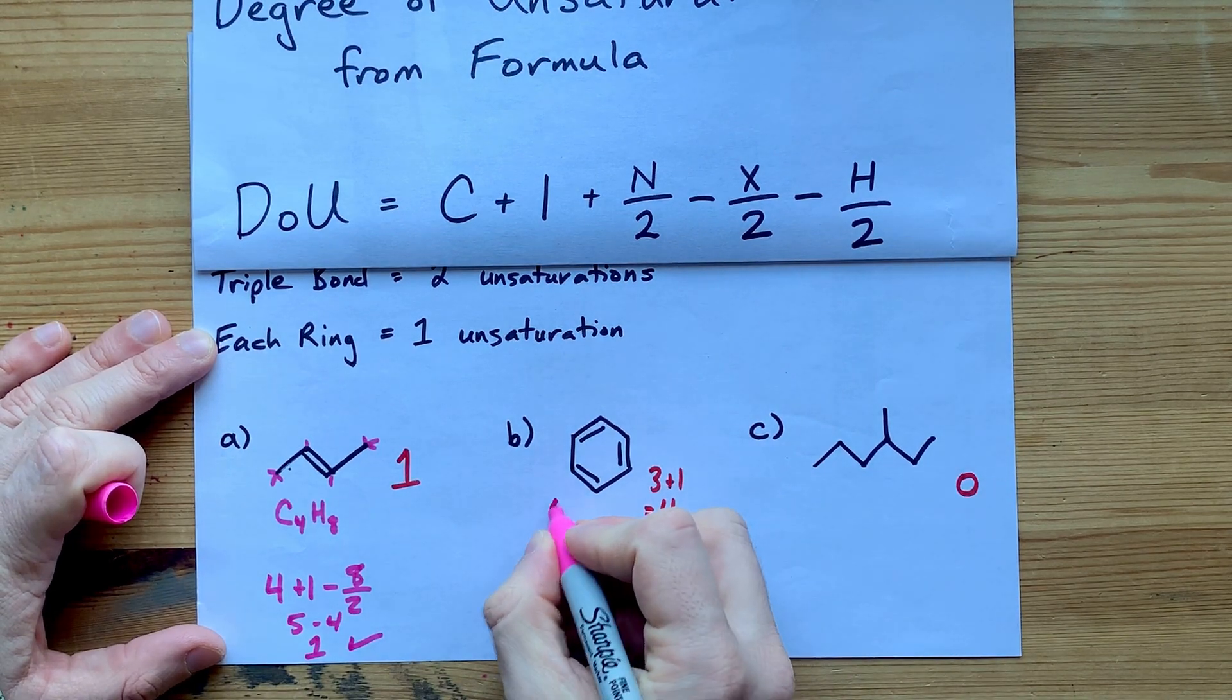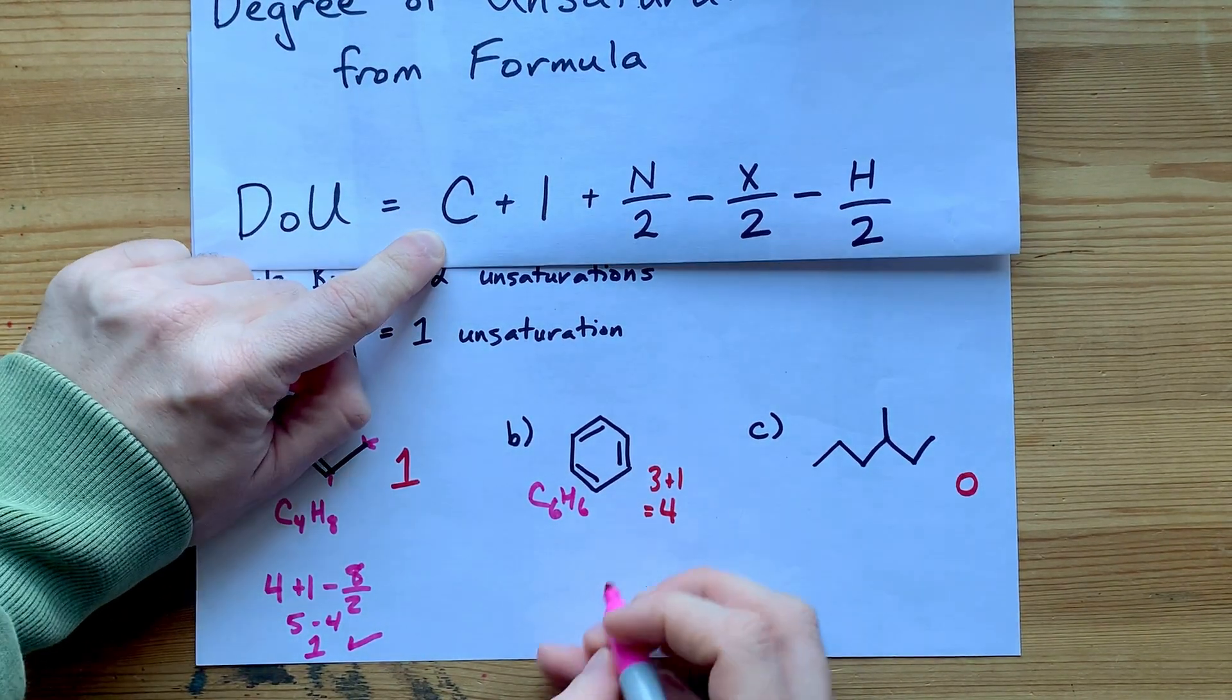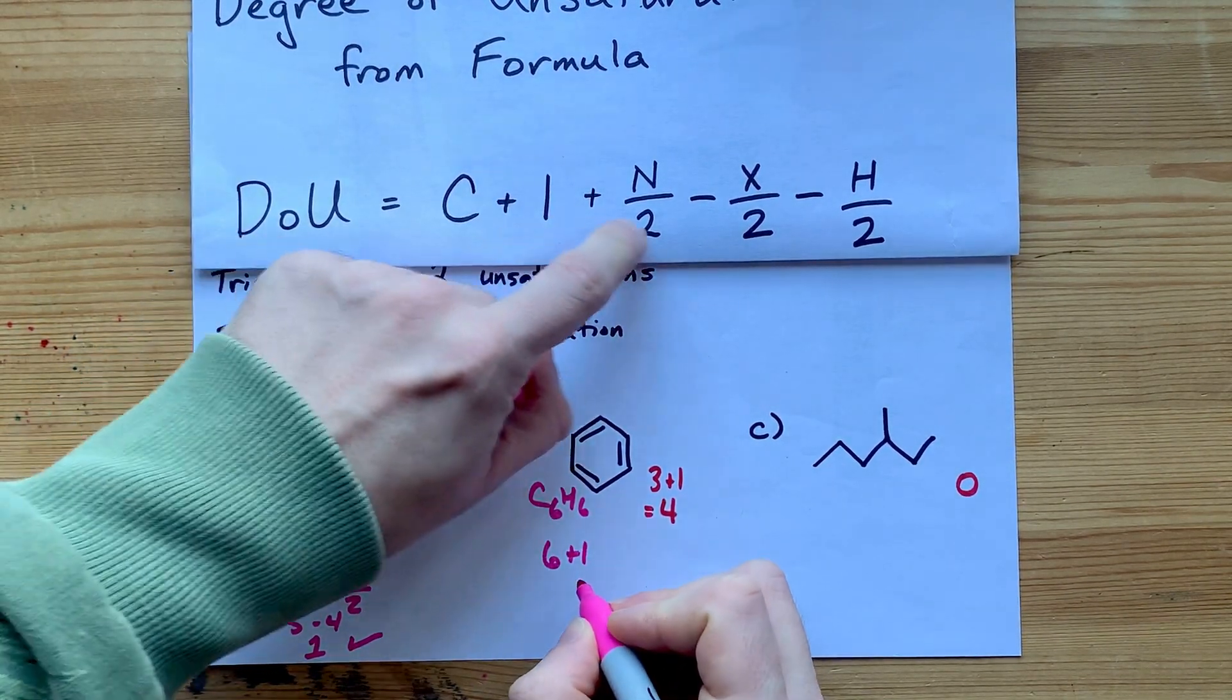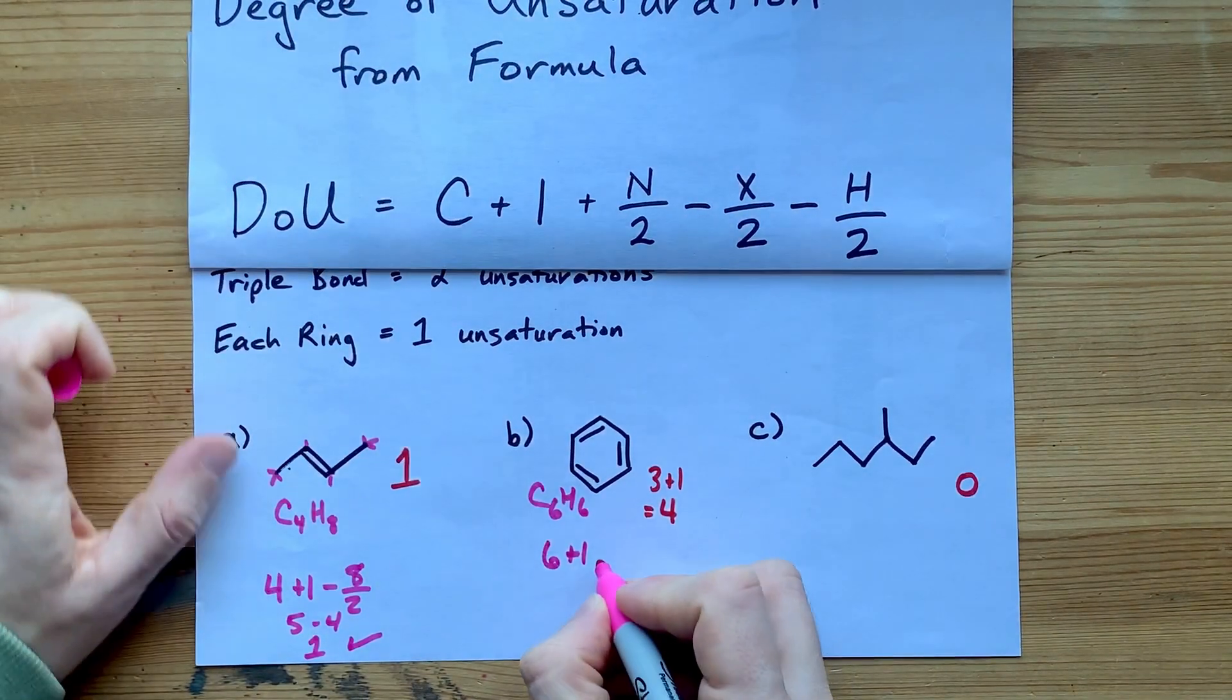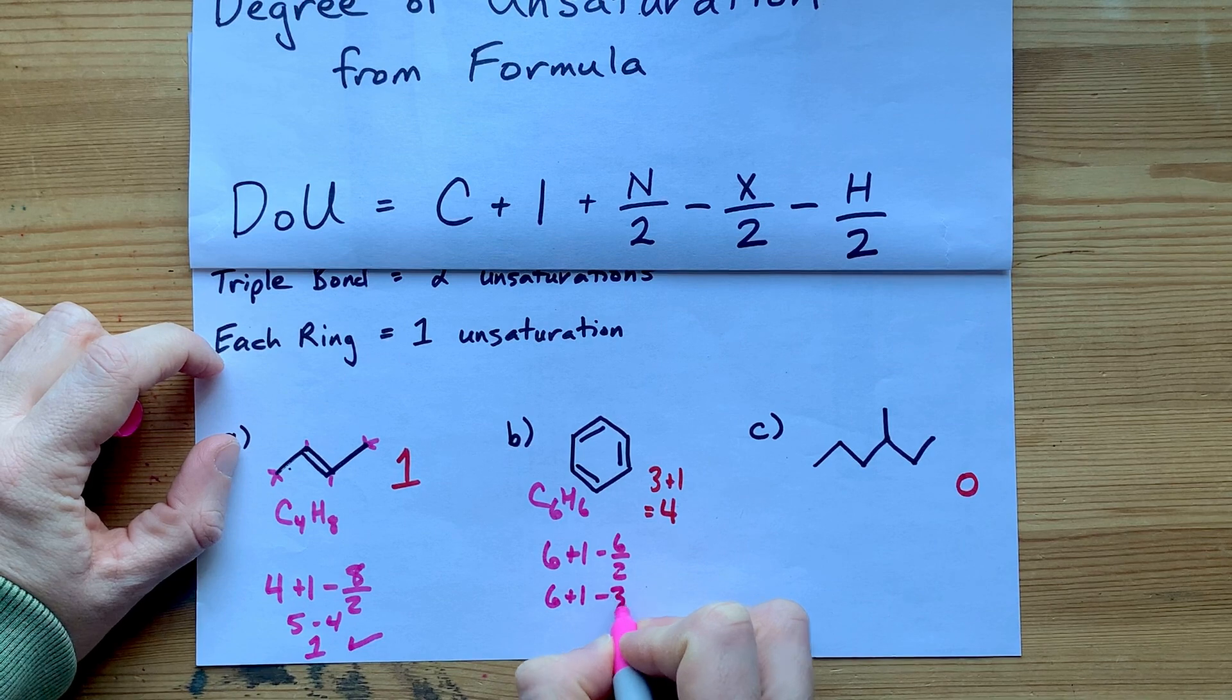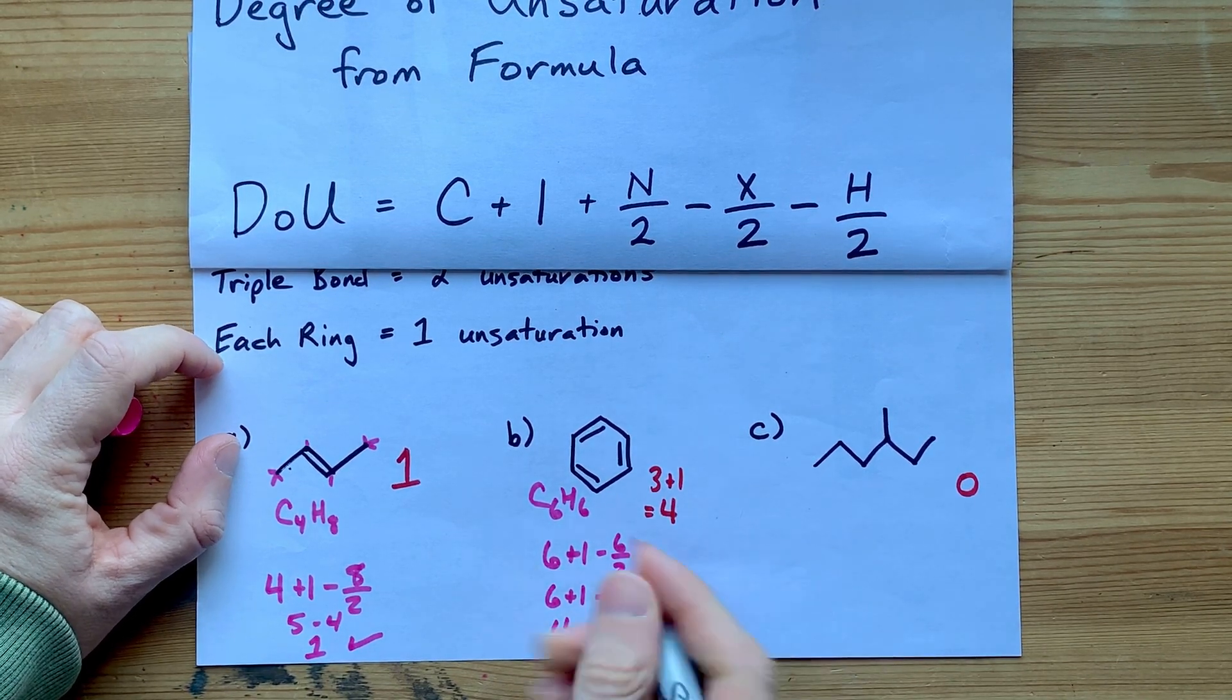Here, we've got benzene, which is C6H6. The formula for degree of unsaturation here is six plus one, no nitrogens, no halogens, minus hydrogens over two. That's six plus one minus three. That gives me four. Hey, we were right again. Nice.